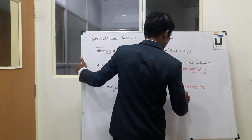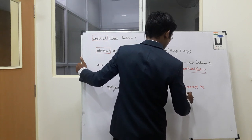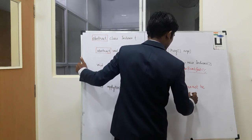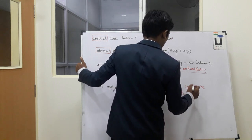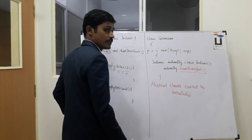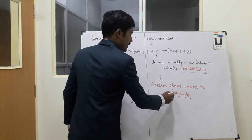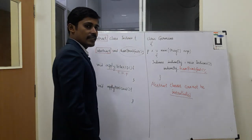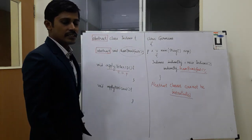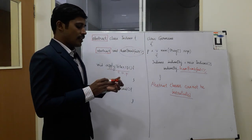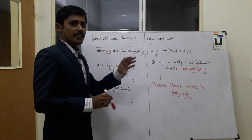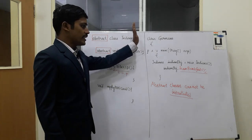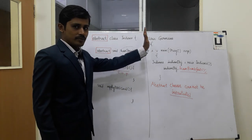If you use the class, you can use the object to create. This is the way — abstract classes cannot be instantiated. So, an abstract class can be defined but not instantiated directly.